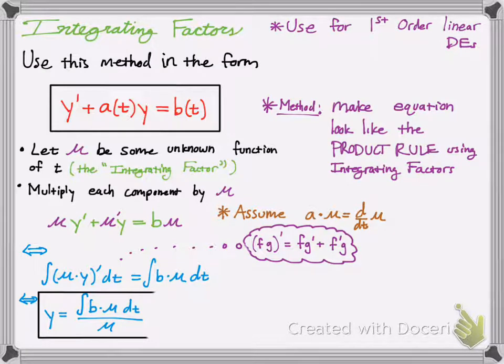The anti-derivative of that would just give you y instead of y prime, and then you divide by mu to both sides, and then you have that plus c there. And remember, when you divide by mu to both sides, the c constant is also divided by mu.